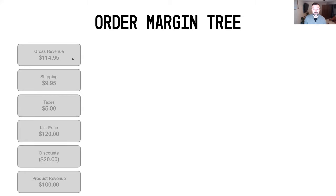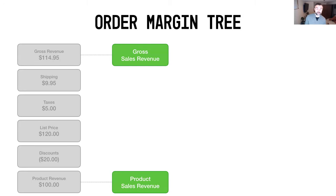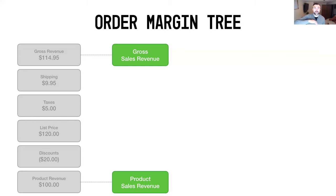These numbers are important because as we work through the order margin tree, we're going to look at both the gross revenue and the product revenue. We've relabeled those a bit to make the delineation clear — gross sales revenue being basically what you're charging to the customer, and product sales revenue being what you're actually collecting on the individual product sales themselves.